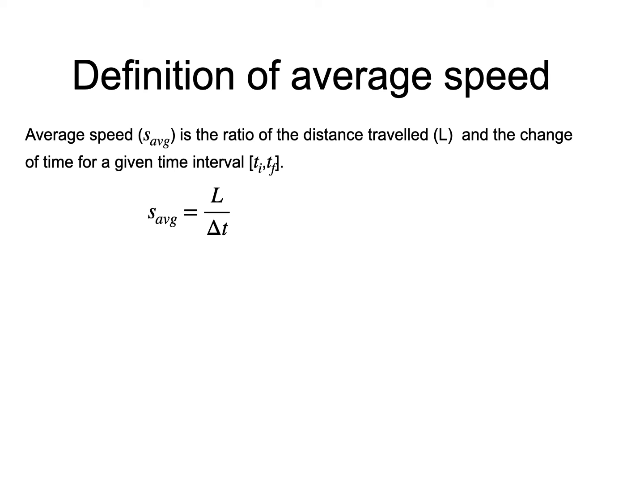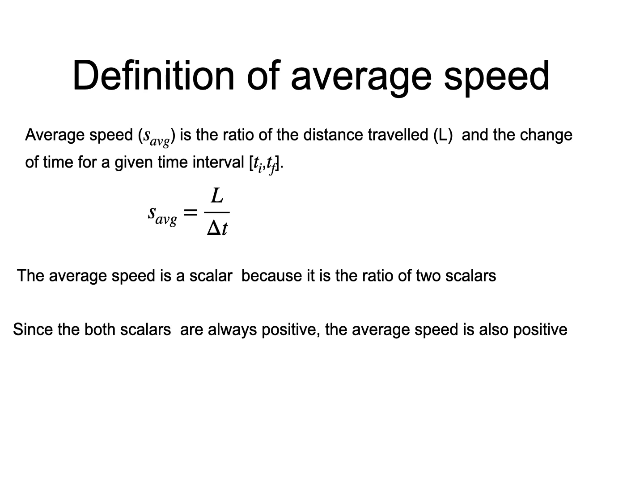The measurement unit for the average speed is the ratio of a distance unit and a time unit, like for example km per hour or meters per second.